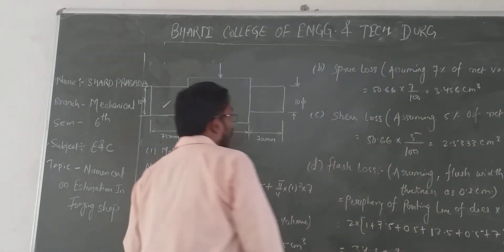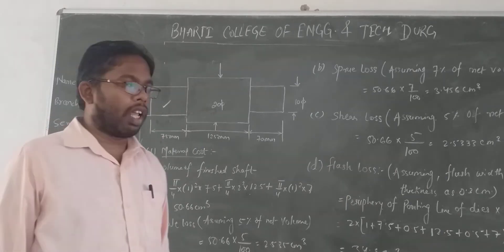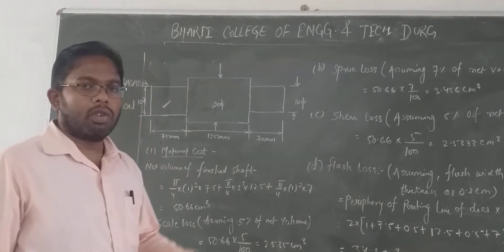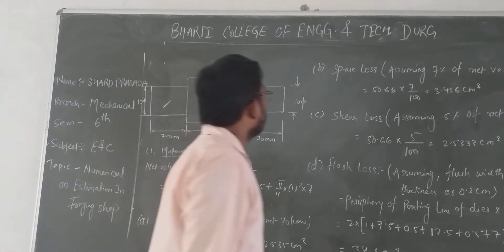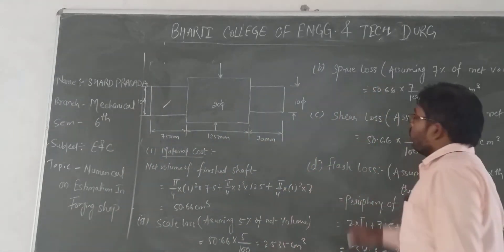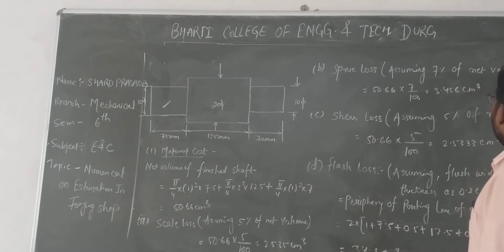Now screw loss. Screw loss, assume 7% of net volume. 50.66 × 7 divided by 100 equals 3.546 cm³.